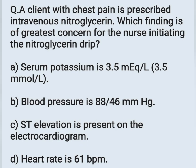Next question: a client with chest pain is prescribed intravenous nitroglycerin. Which finding is of greatest concern for the nurse initiating the nitroglycerin drip? A) serum potassium level is 3.5 mEq/L, B) blood pressure is 88/46 mmHg, C) ST elevation is present on the ECG, D) heart rate is 61 beats per minute.